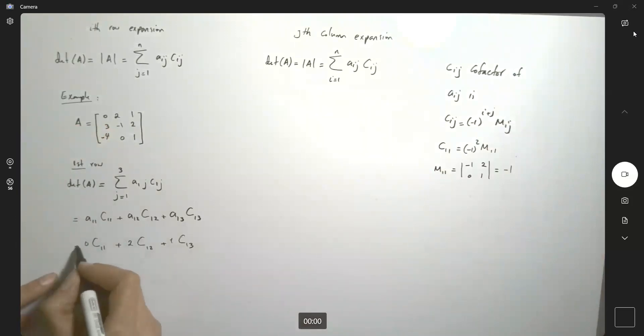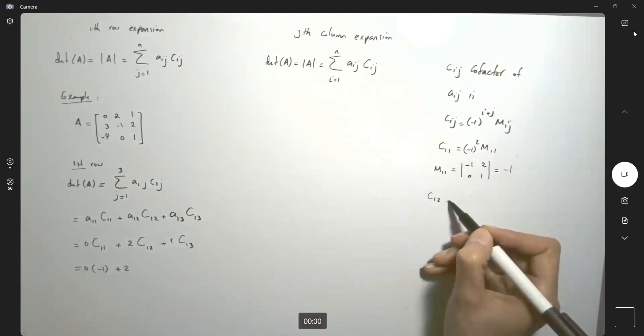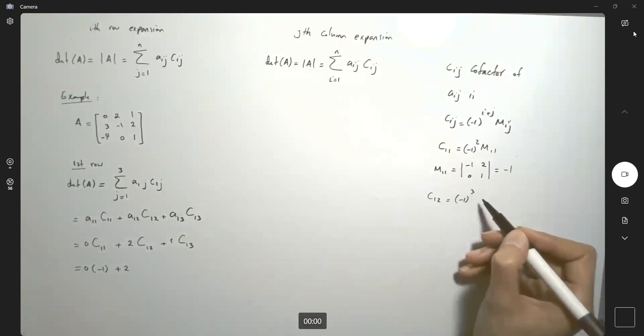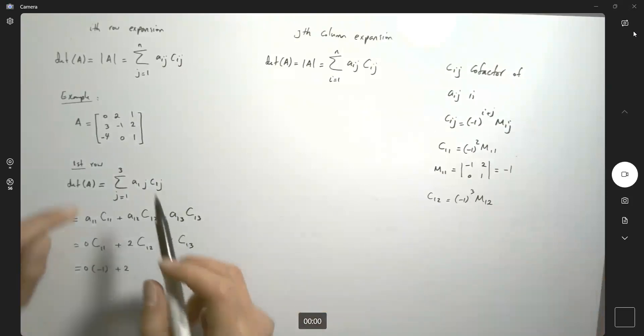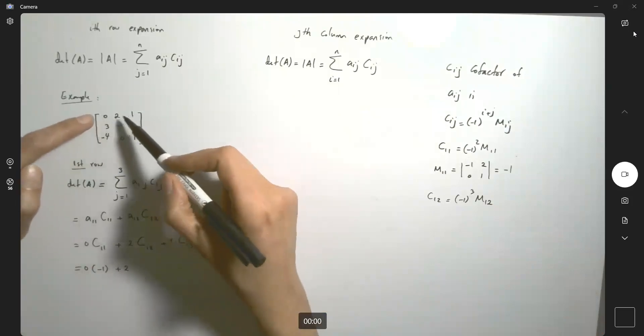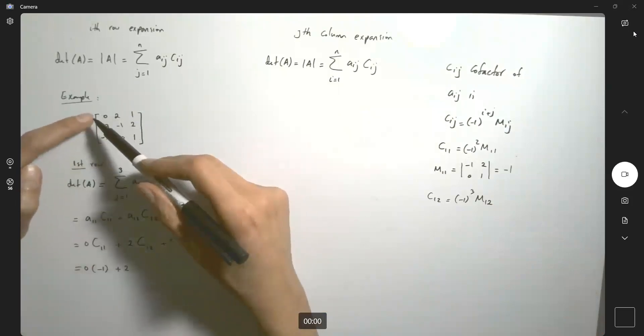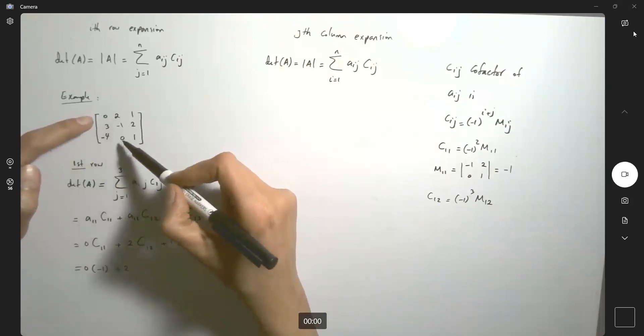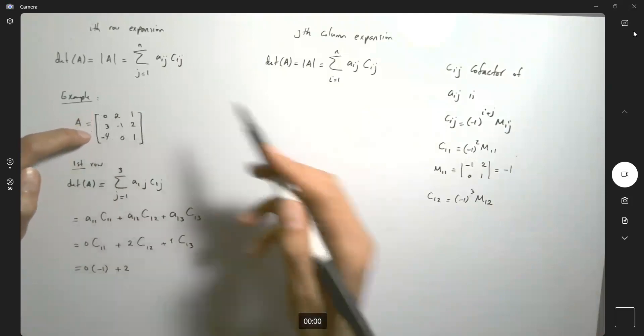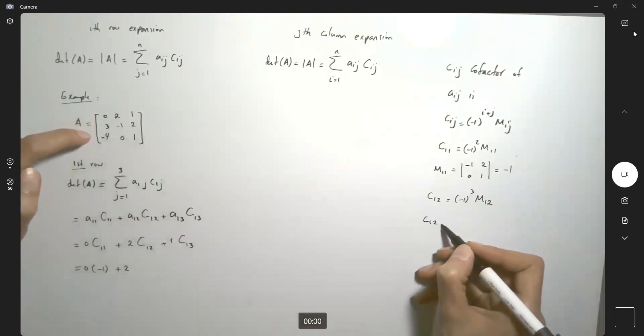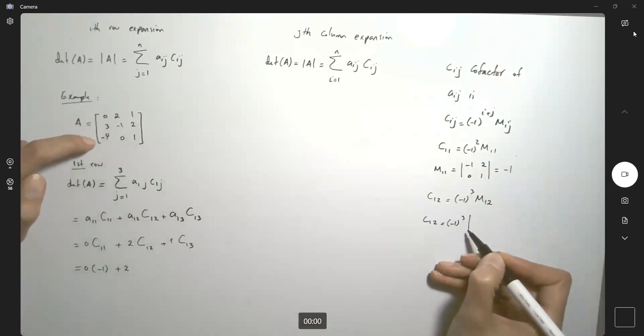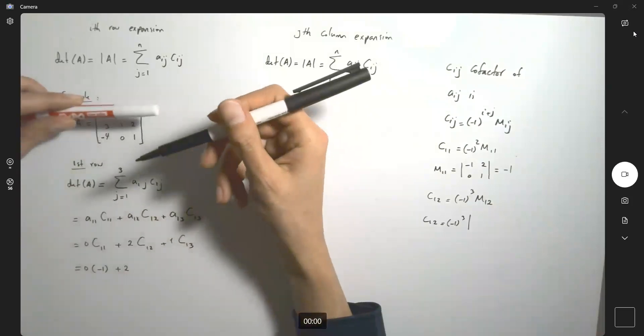So far you have 0 times -1 plus 2 times C1,2. By definition, C1,2 is equal to (-1)^3 times M1,2. M1,2: the very first row and the second column. You end up with this matrix. C1,2 is equal to (-1)^3. Here you are eliminating these two.